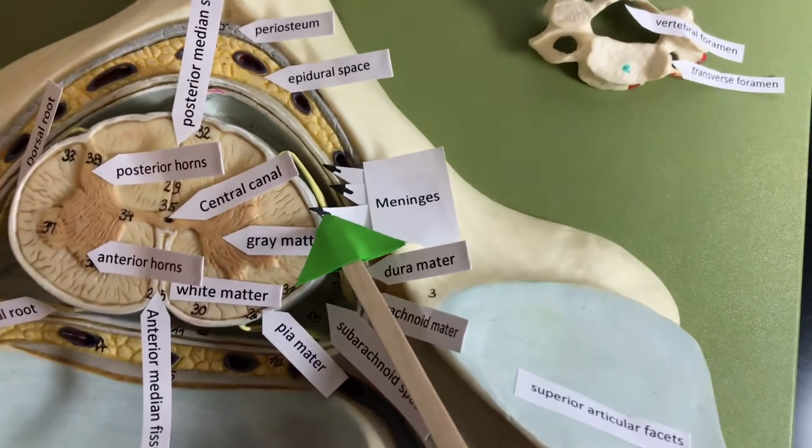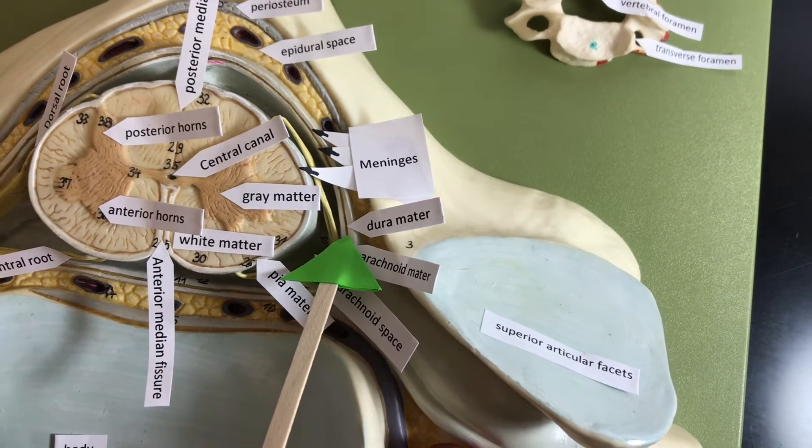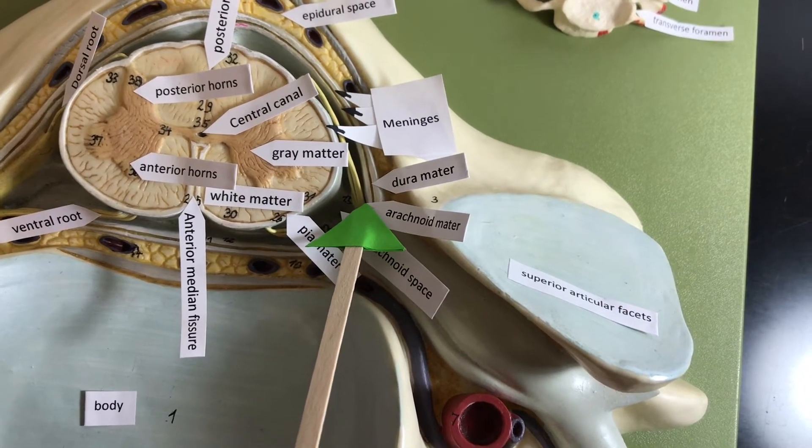The meninges are three layers that are going to protect the brain and the spinal cord. So the outermost layer is called the dura mater. It's tough. Then we have the arachnoid.